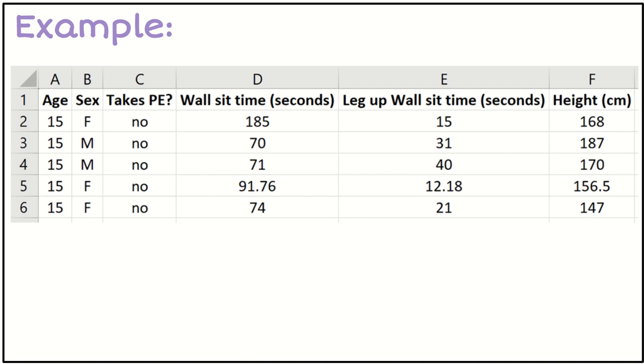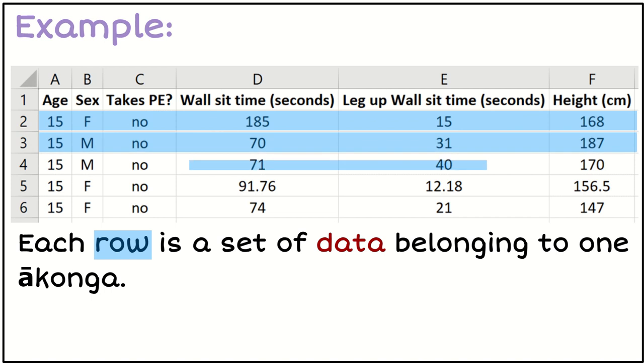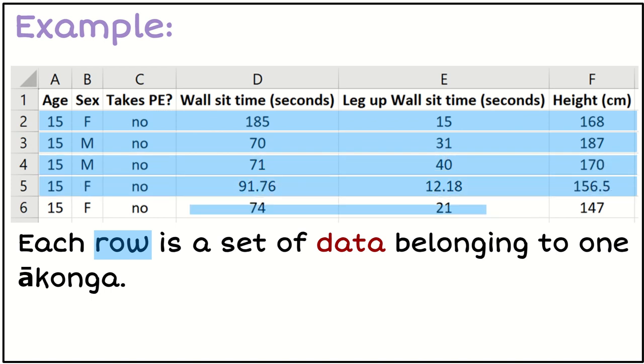Let's have a look at this example here. I've got a spreadsheet, and each row is a set of data belonging to one Akonga. Each row is one student's data. For example, the first student is 15 years old,